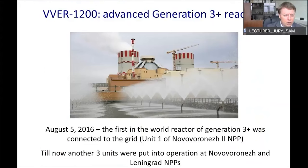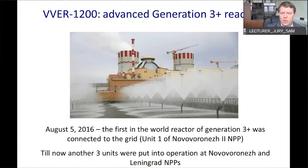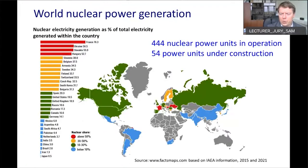The Russian Federation was the first country to start exploitation of Generation III+ nuclear power plants, at Novovoronezh nuclear power plant unit 6, on August 5, 2016. Nowadays we are constructing and starting exploitation of two units at the Leningrad nuclear power plant with the same type of reactor.